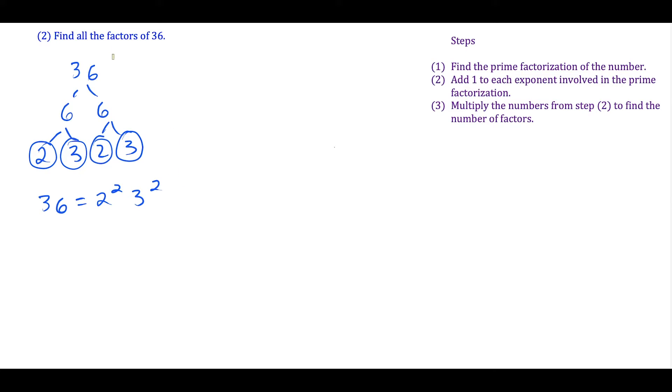Here's our prime factorization. For step 2, you focus on the exponents involved. This tells us the number of factors of 36 equals—remember the trick—we add 1 to each exponent. We have 2 plus 1 times 2 plus 1. When we work this out, 3 times 3 equals 9.